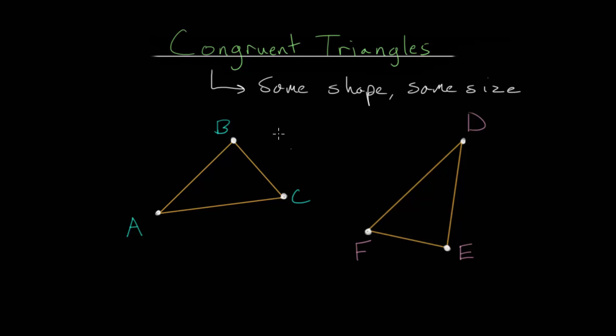But if we perform the transformation of scaling, either making the triangle bigger or making it smaller, then they will no longer be congruent. In fact, we have a different word for that. We would call those triangles similar. They have the same shape, but not the same size.